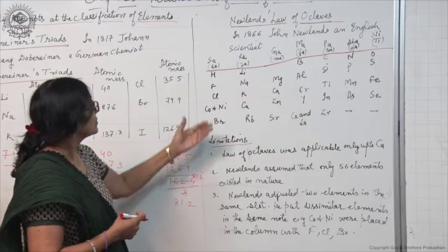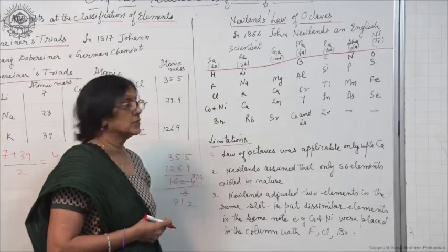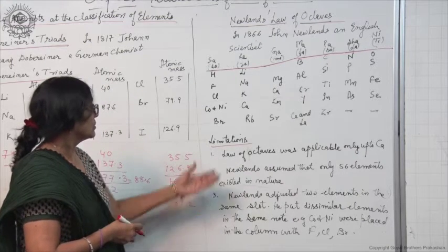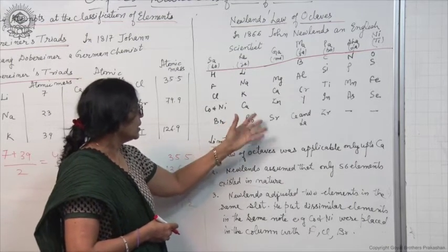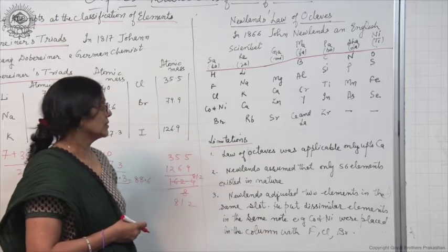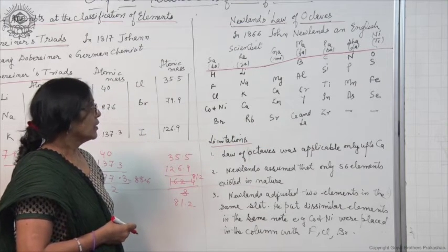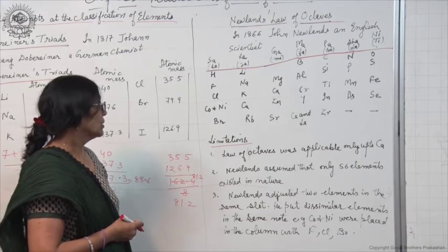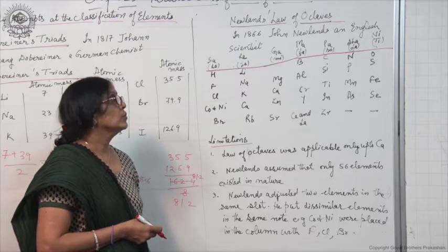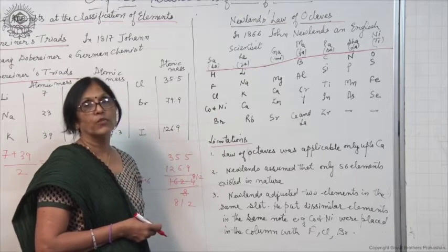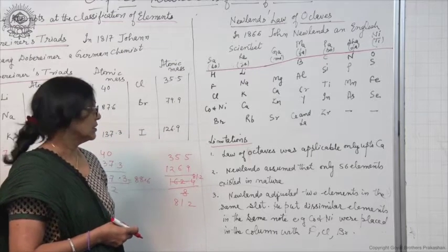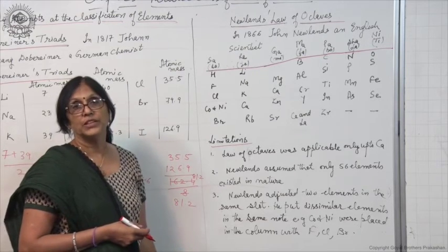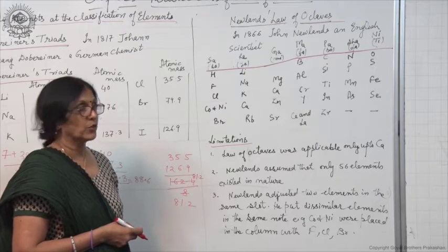This rule was observed up to calcium. Later on, so many limitations were there — anomalies and defects were found, due to which Newlands' Law of Octaves was also rejected. Let us discuss what were the limitations and anomalies.